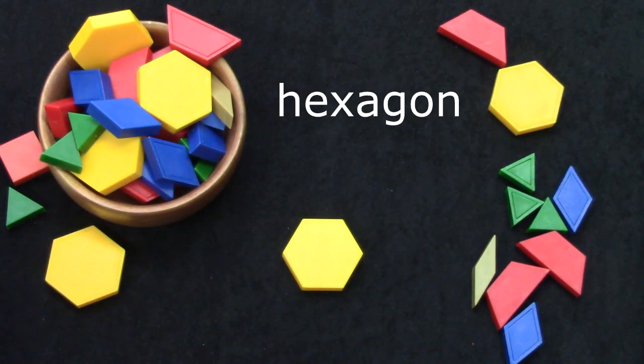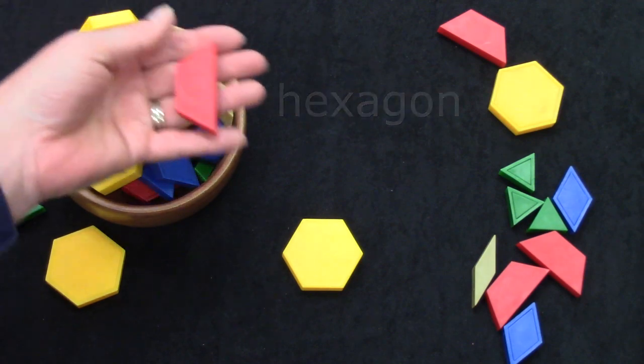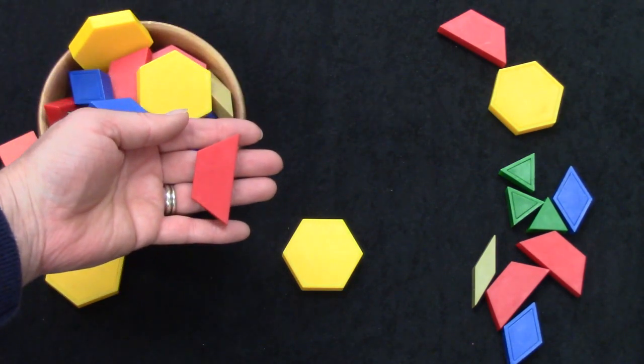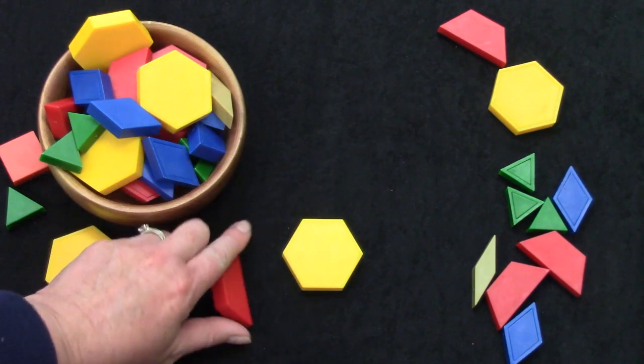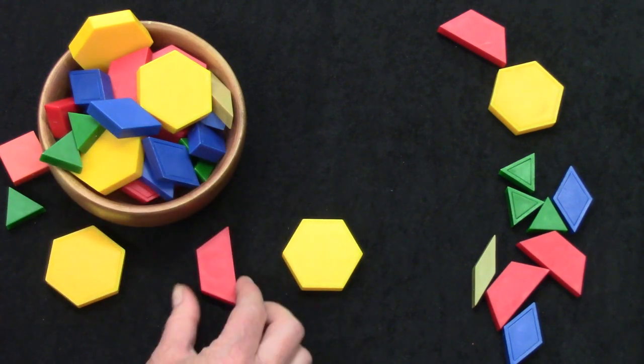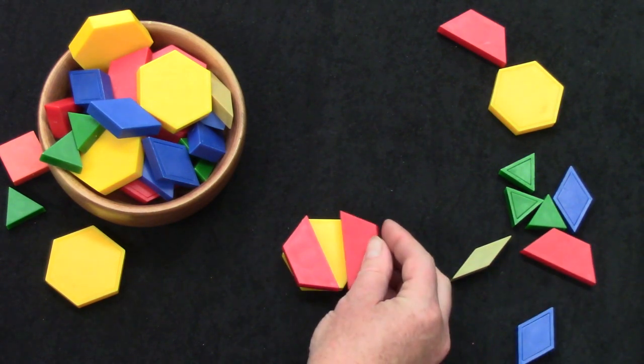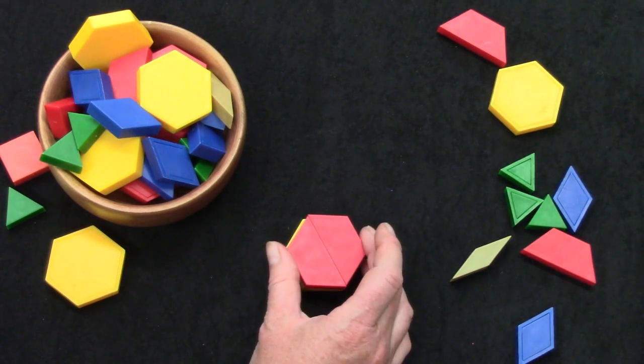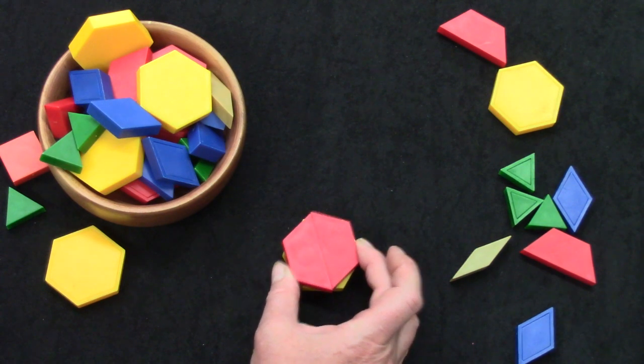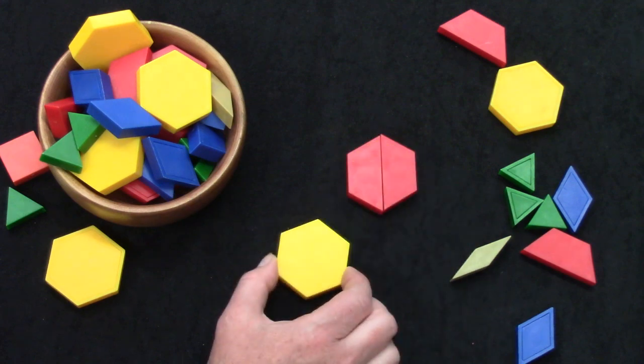I'd like for you to experiment today. Try with other shapes. How many trapezoids would you need to cover the hexagon? How many? Well, I'll try it, but I'd like for you to try it too. It looks like two trapezoids will cover the hexagon.